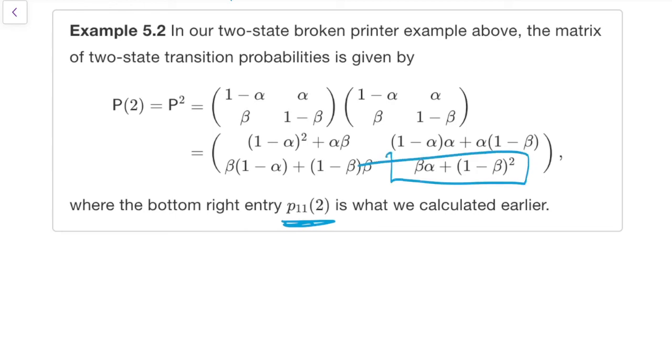And if you check back, you'll see that we saw it was beta alpha plus 1 minus beta squared. So we managed to get the same answers both ways. One, by summing over all paths of the right length, and two, by doing a matrix multiplication.